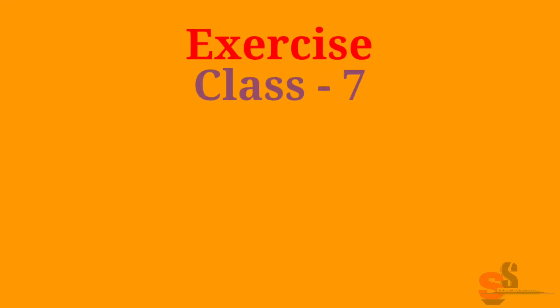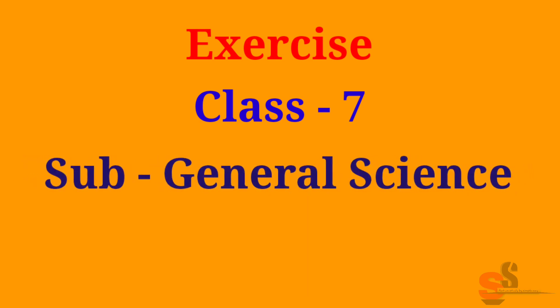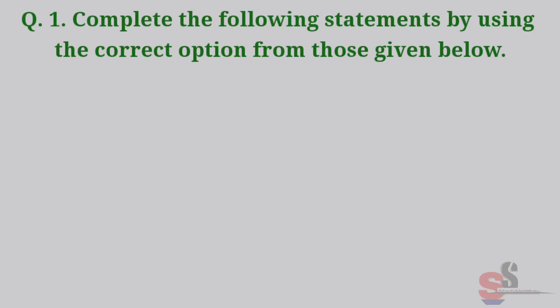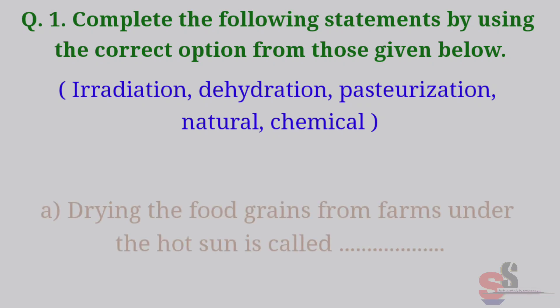Exercise Class 7, Subject: General Science, Chapter No. 5 - Food Safety. Question No. 1: Complete the following statements by using the correct option from those given below. Options are: Irradiation, Dehydration, Pasteurization, Natural, Chemical.